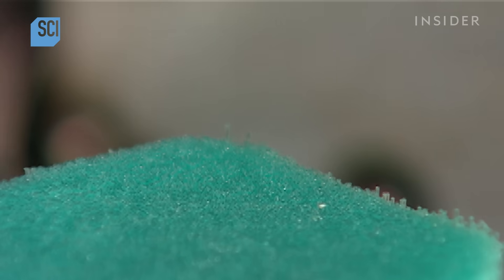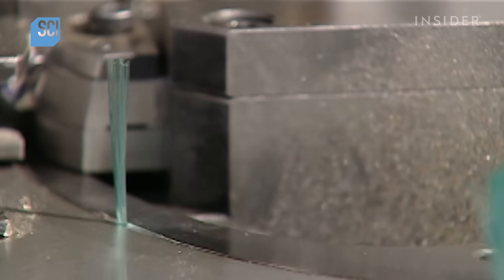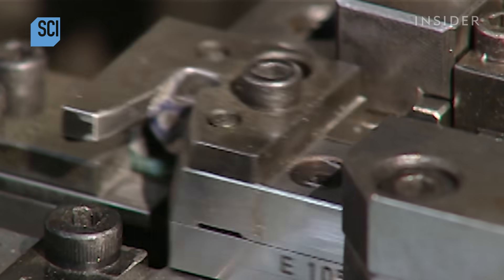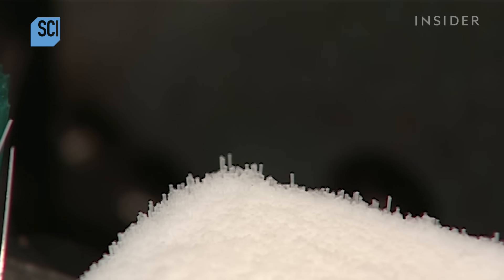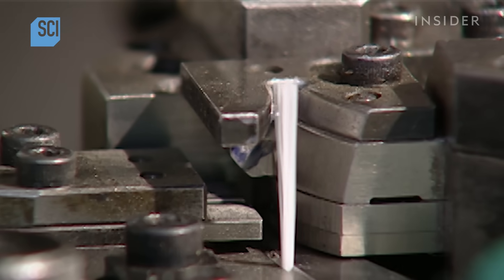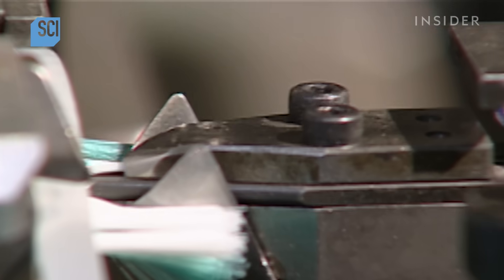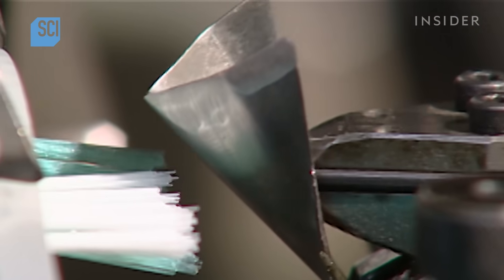Here's the bristle selection process in slow motion. The machine selects between 22 and 24 bristles for each hole in the brush. With 56 holes per toothbrush, that adds up to over 1,300 bristles for each brush.